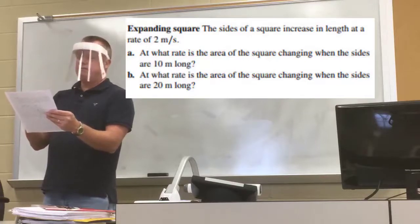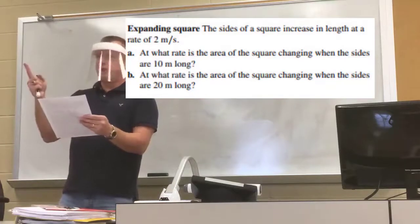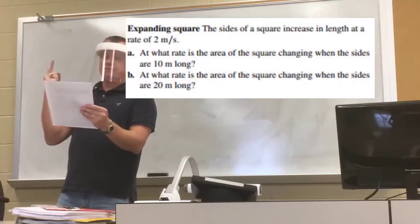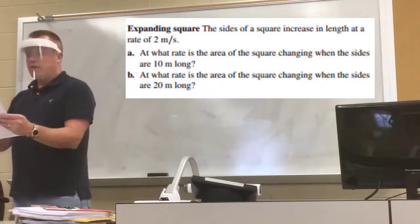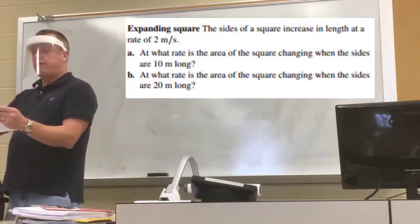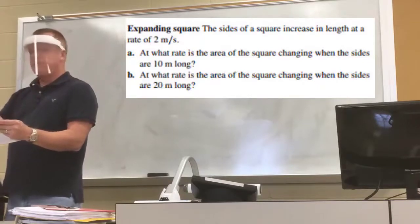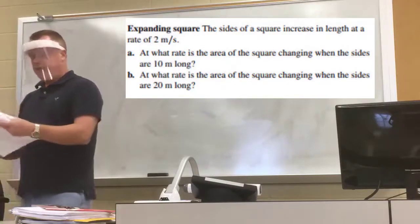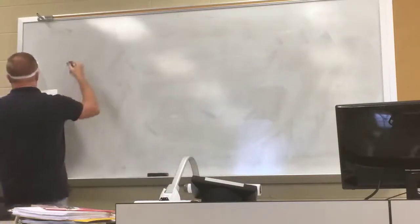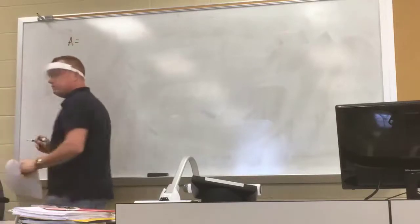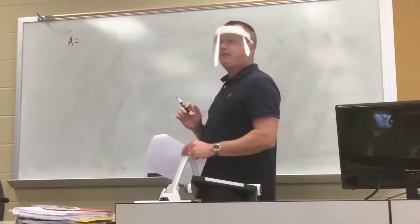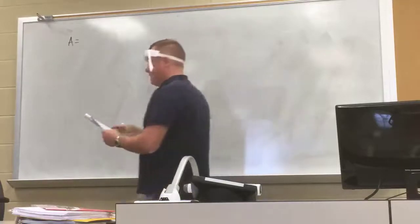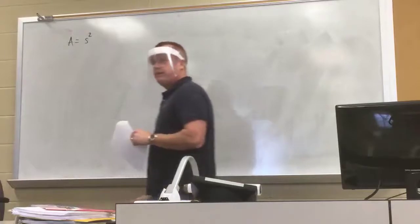The problem talks about a square — its sides and its area. The area of a square is length times width, and since length equals width, we can say A equals s squared. That's our formula.